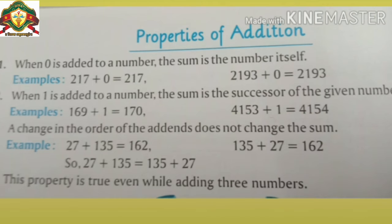And dear student, do you know — when we add zero to any number, the sum is the number itself. किसी भी number में when we add zero, then the answer will be the number itself. चलिए एक example देखते हैं — here is 217 plus zero, so the answer is 217.